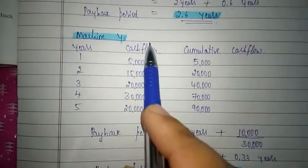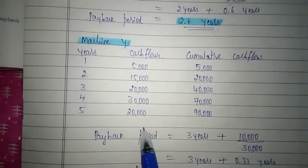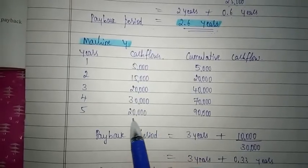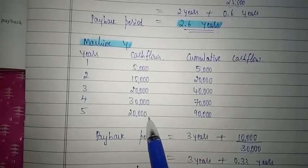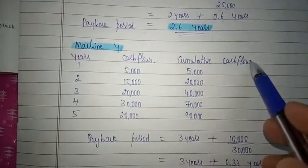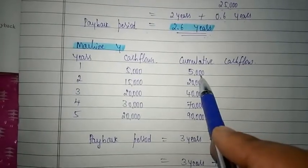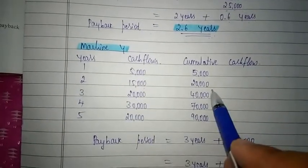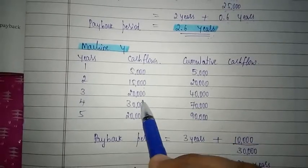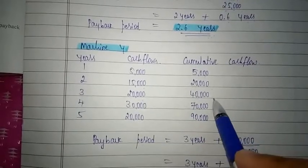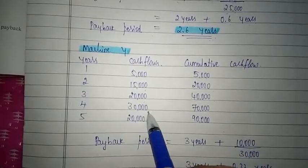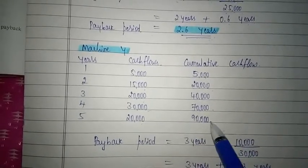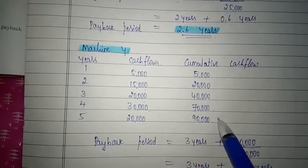Write the years and cash flows for machine Y: 5,000, 15,000, 20,000, 30,000 and 20,000. Calculate cumulative cash flow: first year 5,000; second year 5,000 plus 15,000 equals 20,000; third year 20,000 plus 20,000 equals 40,000; fourth year 40,000 plus 30,000 equals 70,000; fifth year 70,000 plus 20,000 equals 90,000.